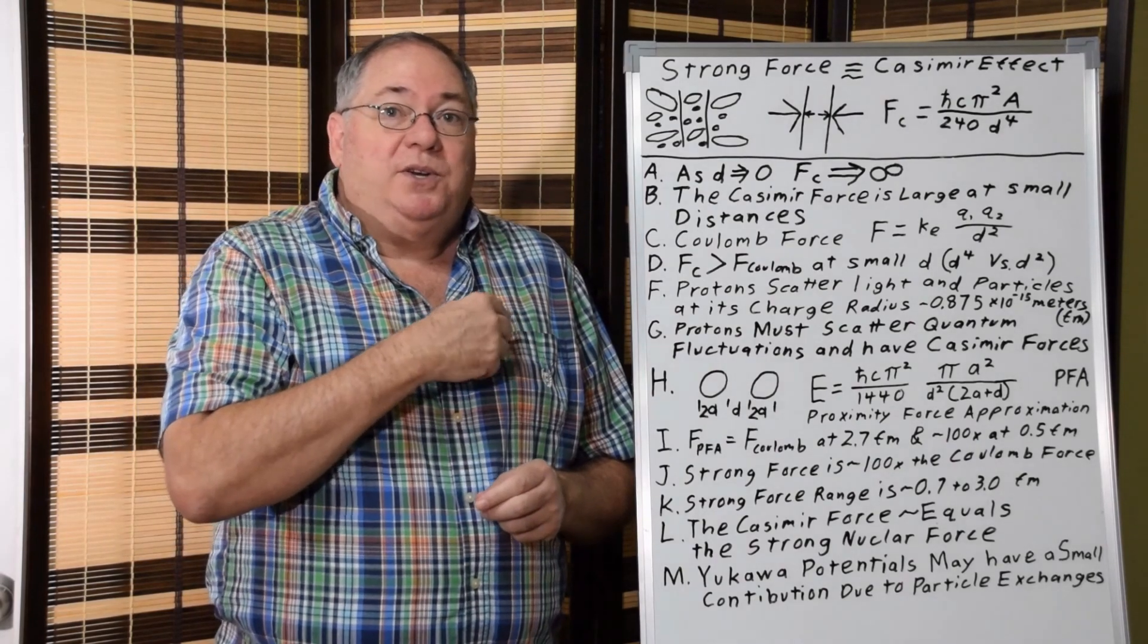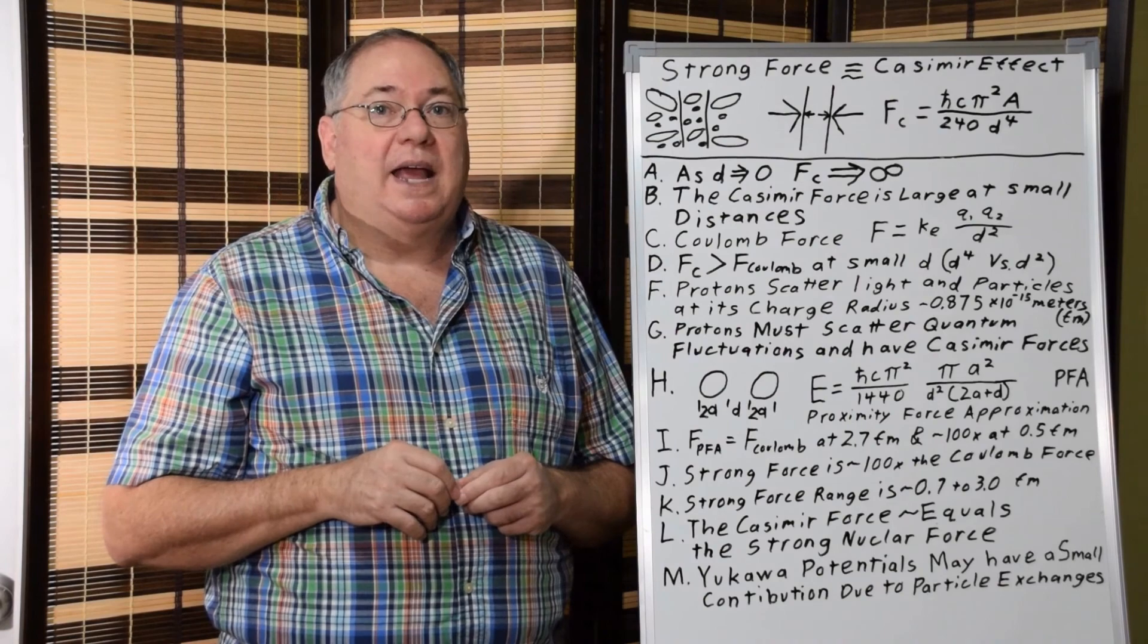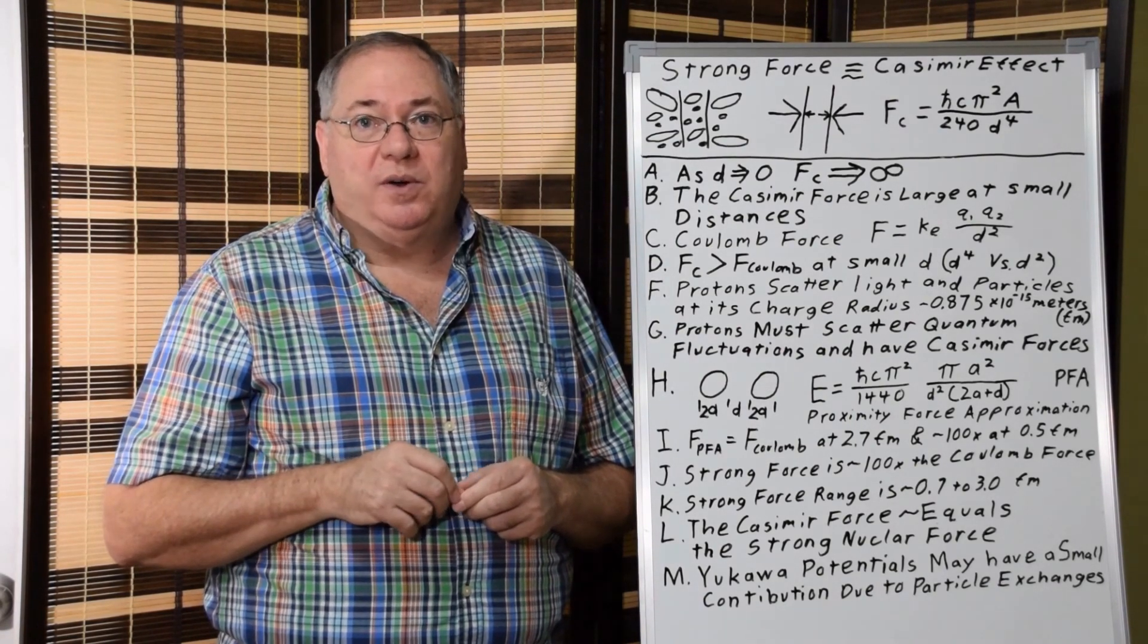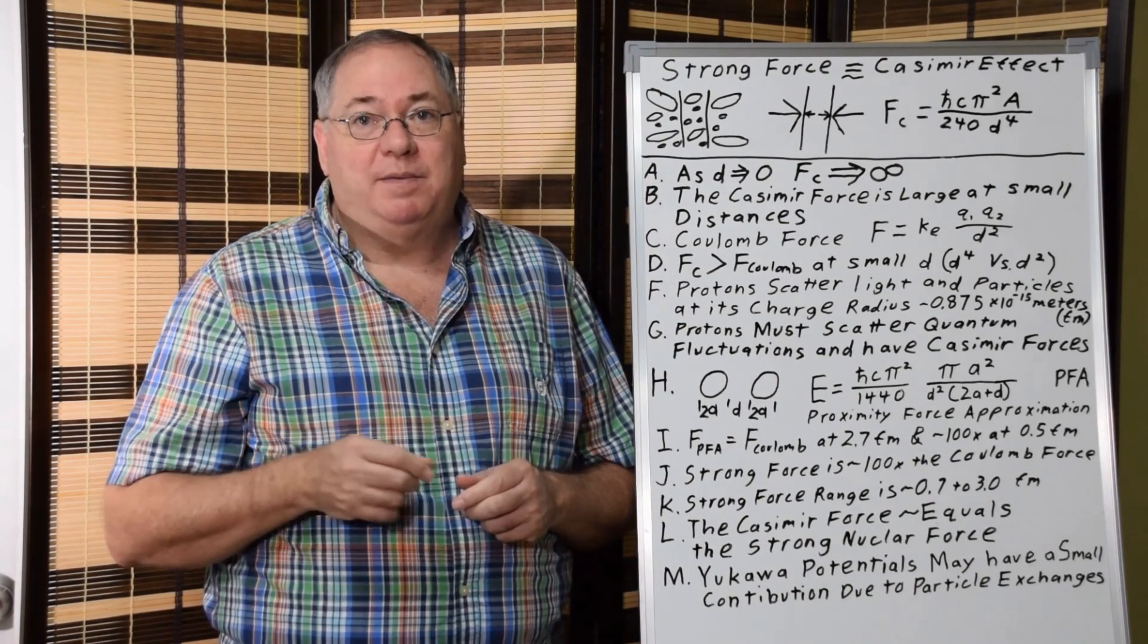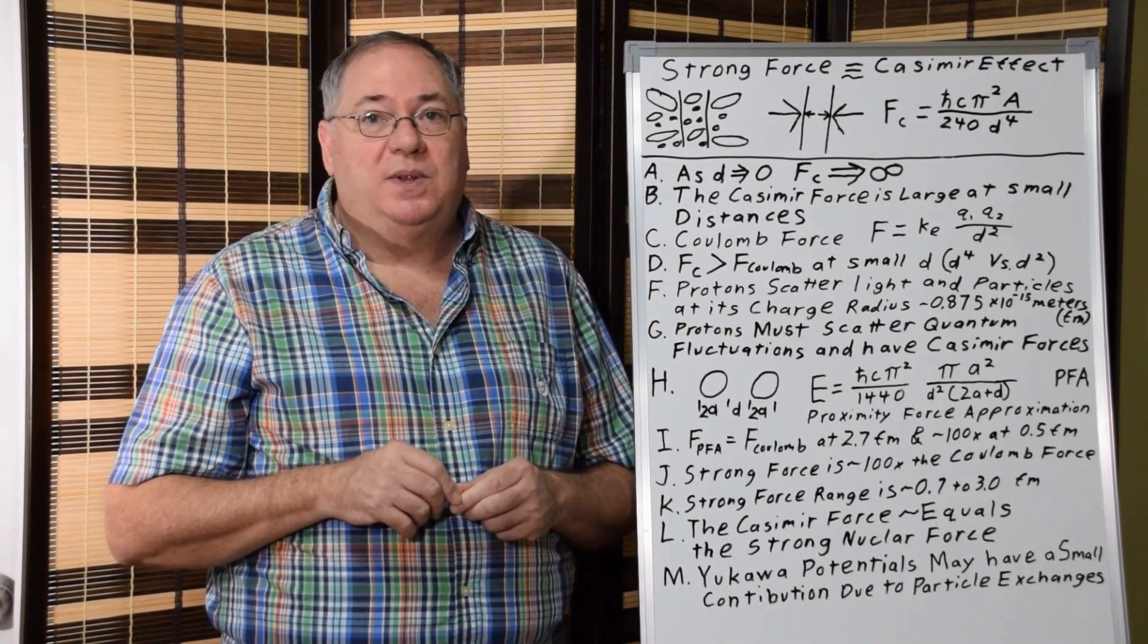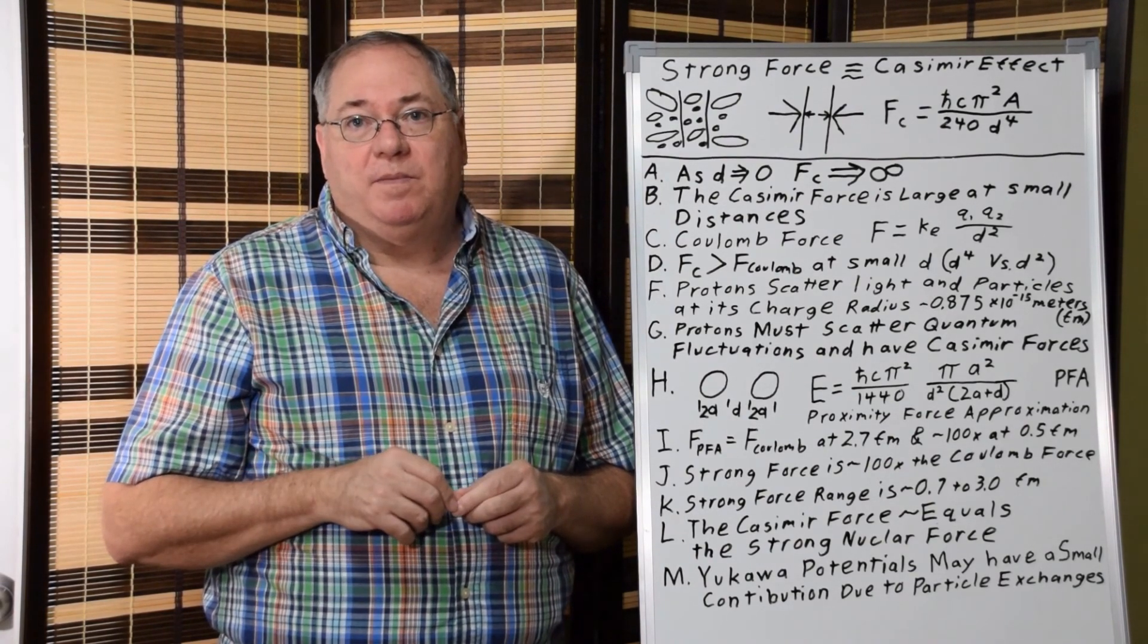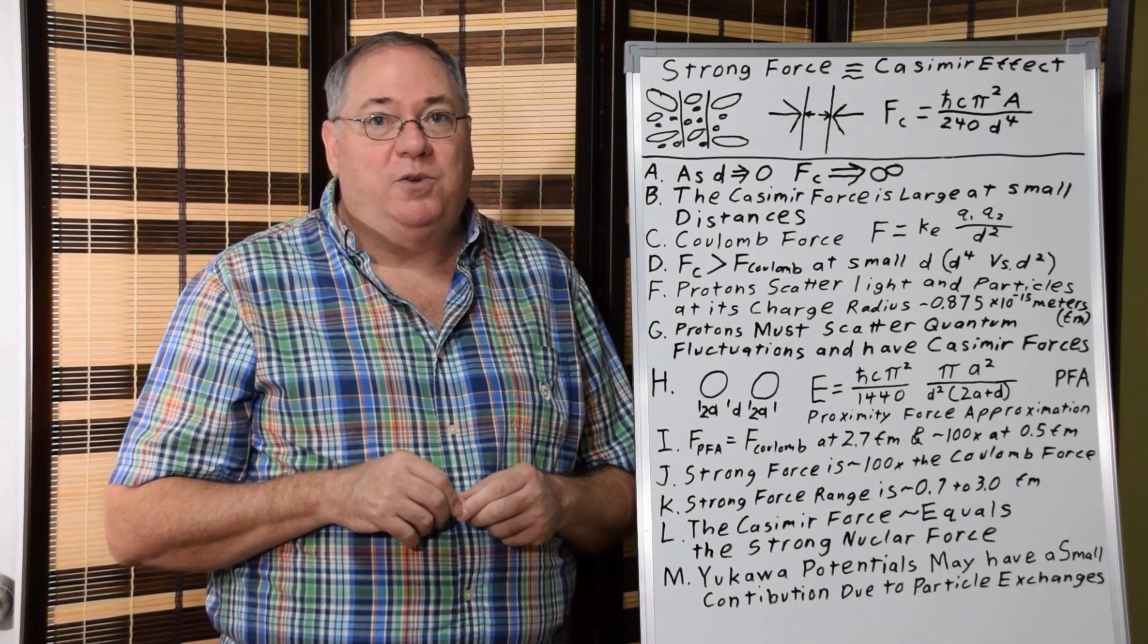And also in terms of the energy or force, the Casimir force is about 87 times stronger than the Coulomb repulsion at half a femtometer. And so this is very similar to the known strength of the strong force, which is about 100 times stronger than the Coulomb repulsion.